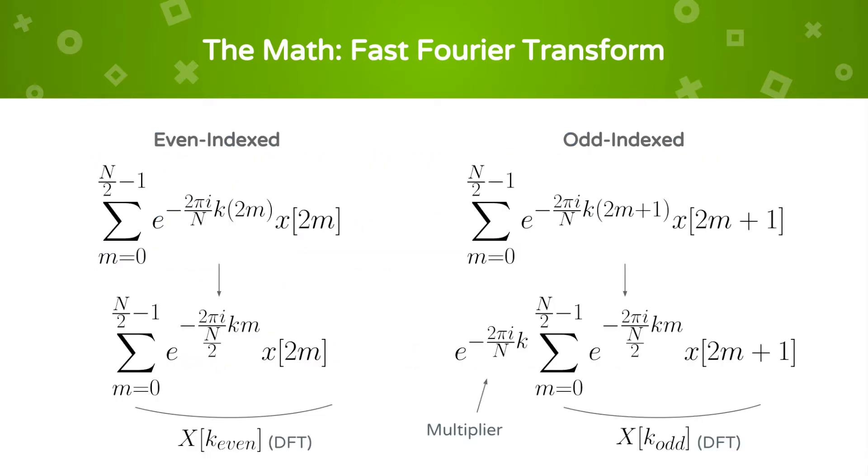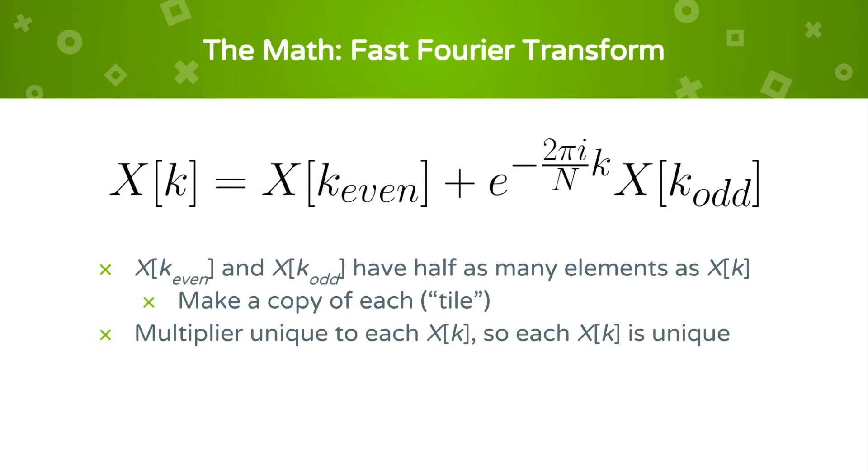The even indexed part is shown on the left, which can be written to x k even, or the discrete Fourier Transform of the even elements. The odd indexed part is shown on the right. It can be rewritten as a multiplier times x at k odd, or the discrete Fourier Transform of the odd elements. There are only half as many even elements and half as many odd elements as the number of x at k we are computing. This is due to the fact that we are dividing the samples in half to split them into the even and odd elements.